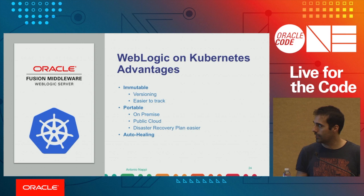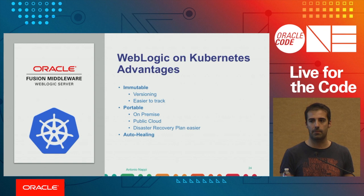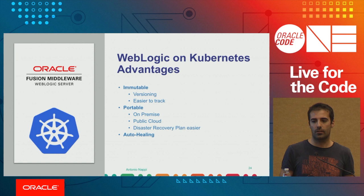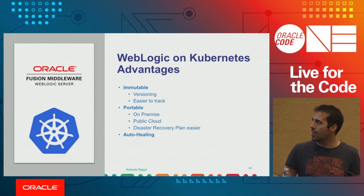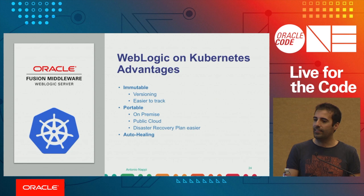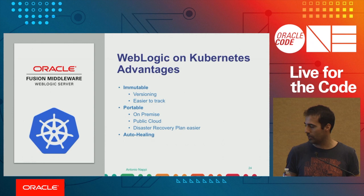We hope to move all dev environments to Kubernetes by the end of this year and production next year. We create Docker images with WebLogic that we run on the Kubernetes cluster. The main reasons: containers are immutable, so we define the WebLogic domain inside the Docker image, making everything consistent. Before, we ran WLST scripts to configure managed servers, and sometimes someone would forget to run a script on a machine. With this approach, everything is the same everywhere. It also makes deployments more portable — we run on-premise and on OCI — and opened the door to evaluating disaster recovery plans.